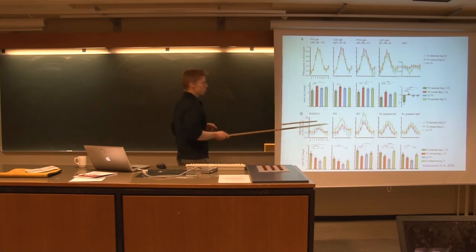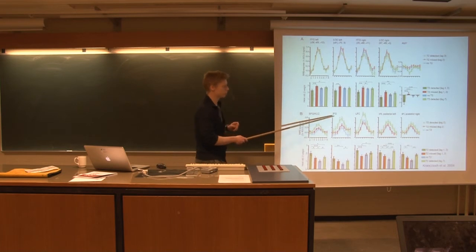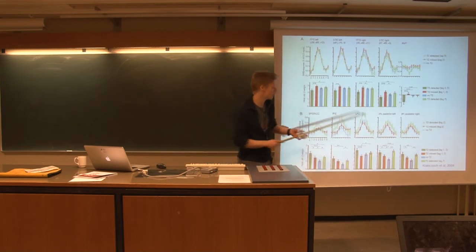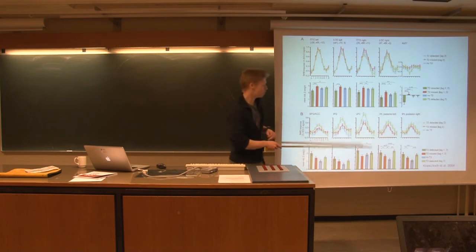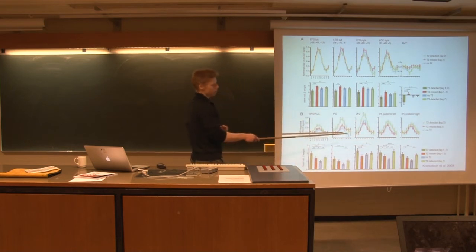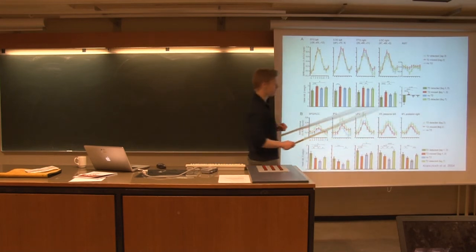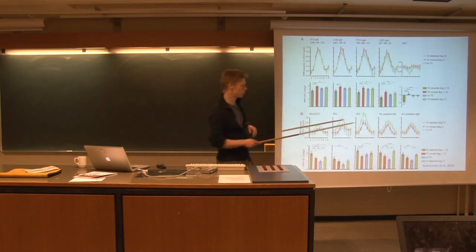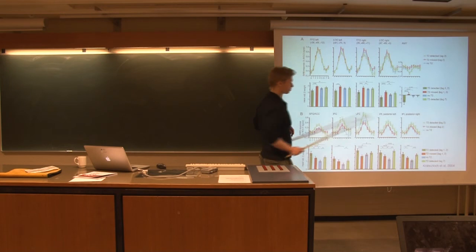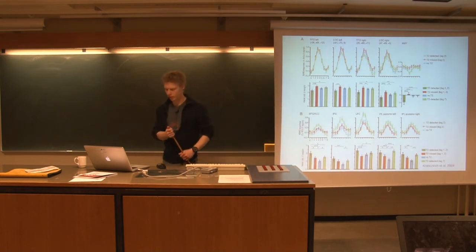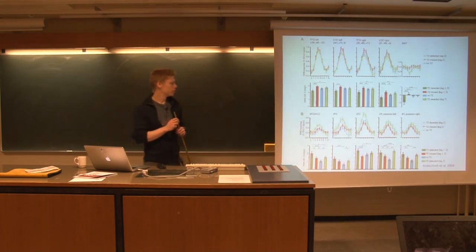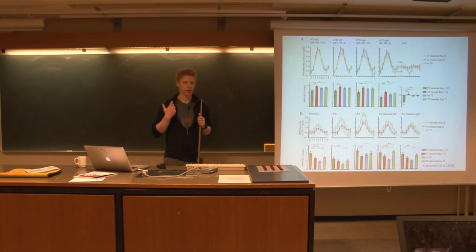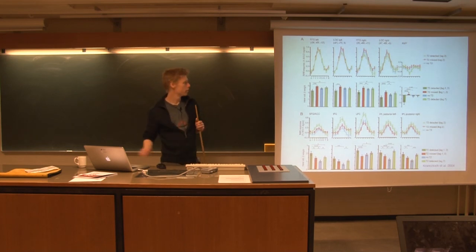Whereas if you go to superior frontal gyrus and the anterior cingulate and the inferior frontal gyrus and the lateral frontal cortex and also parietal areas, you will see that these areas seem to respond a lot more when you detect the second target compared to when you miss the second target. So again, supporting this parietal frontal network that seems to be engaged when you actually consciously detect something in the visual field.